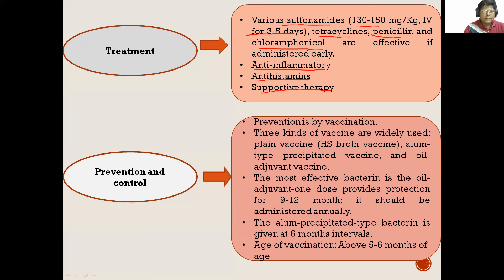The most important method of prevention is by vaccination. There are three kinds of vaccines widely used against HS: HS plain vaccines, alum precipitate vaccines, and oil adjuvant vaccines. The most effective vaccine is the oil adjuvant vaccine, which provides immunity for 12 months and must be repeated annually. The alum precipitate type vaccines are given at 6-month intervals.